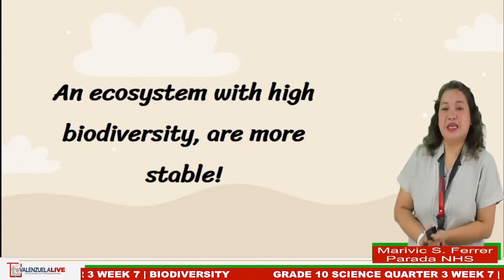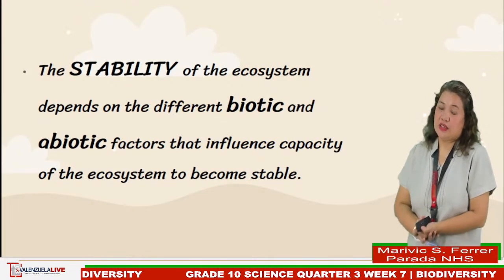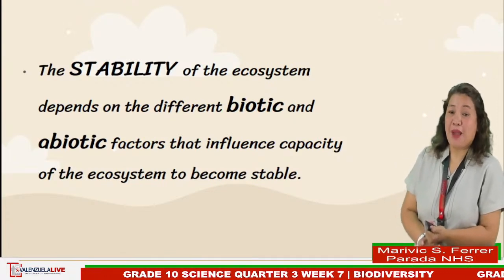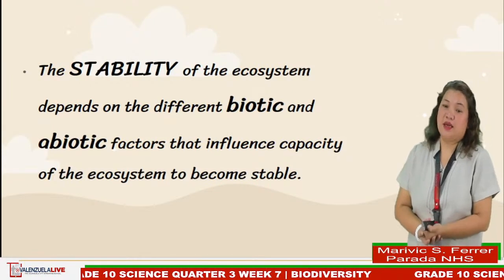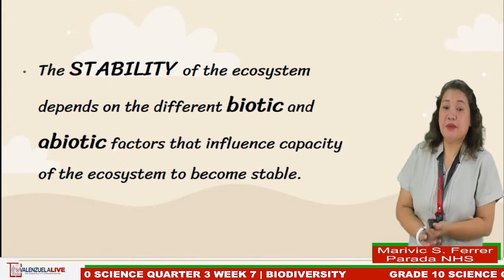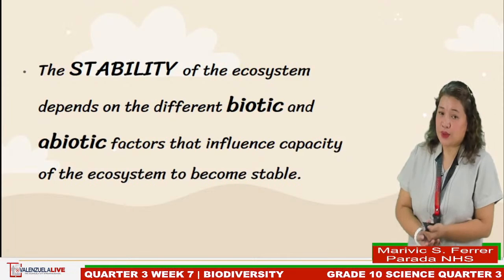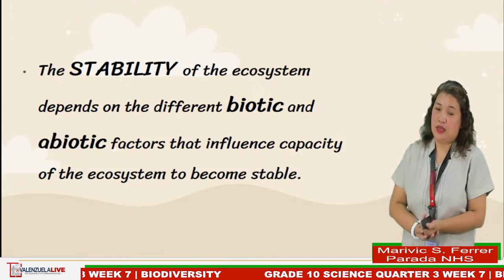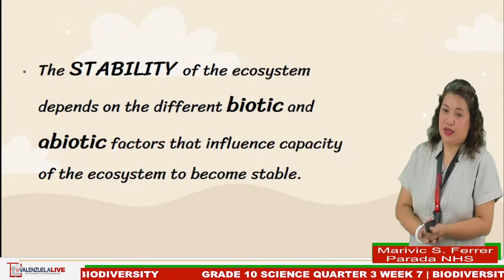Where does the stability of the ecosystem depend? The stability of the ecosystem depends on the different biotic and abiotic factors that influence the capacity of the ecosystem. For instance, plant diversity will not be able to survive without the presence of sunlight, water, and carbon dioxide. Therefore, more pathways for energy and matter means more stability.